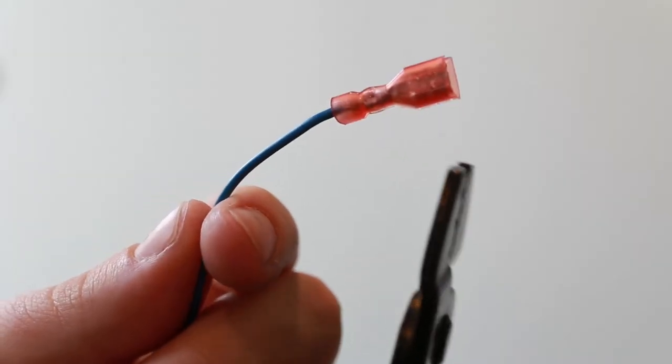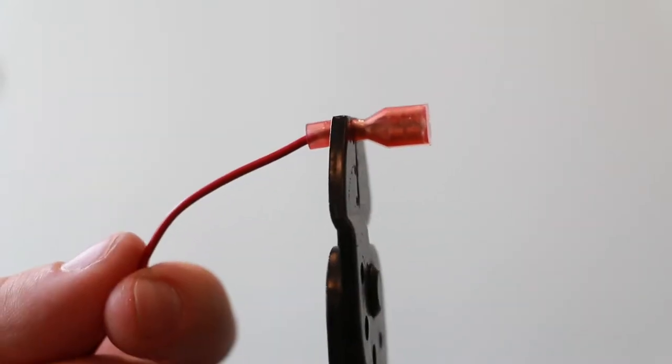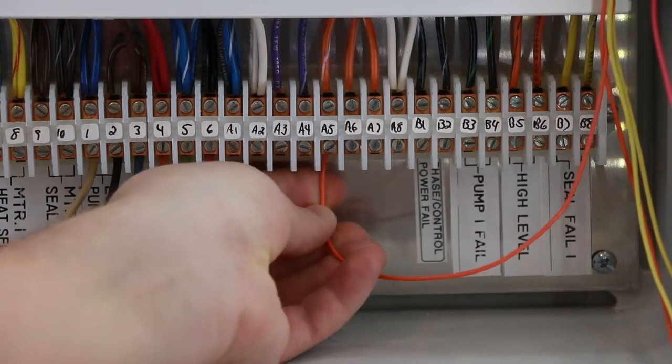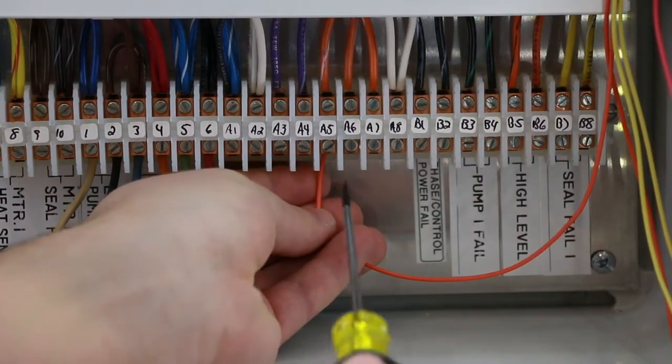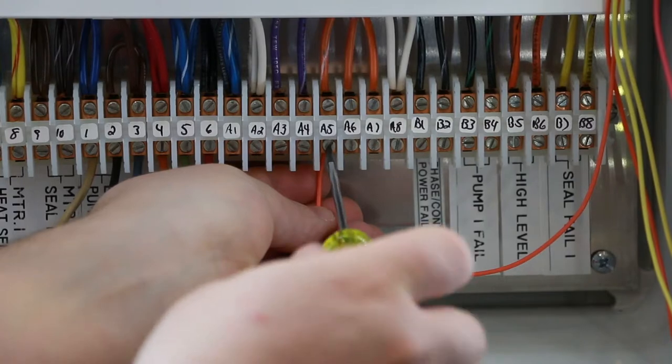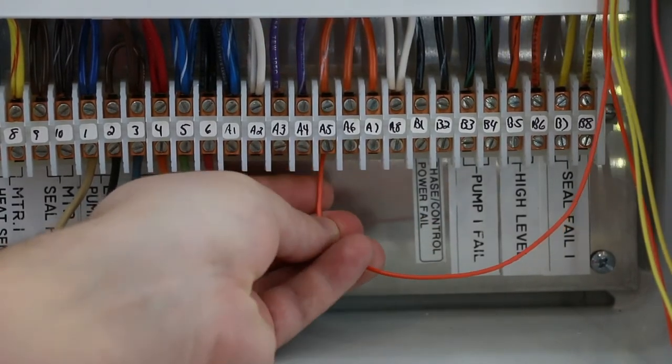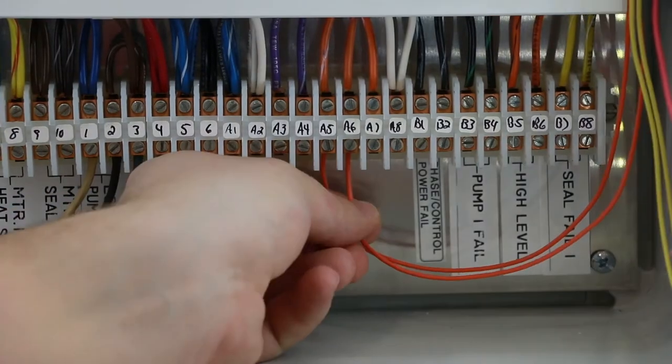Crimp the quick connect terminals onto the end of the battery leads. Land the two orange alarm wires on dry contacts within your panel. Be cautious not to apply any voltage to the orange contacts as this will damage the OmniBeacon. Make sure to verify that your connections are snug.